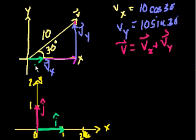So v sub x is in the exact same direction, and it's just a scaled version of this unit vector. And what multiple is it of that unit vector? Well, the unit vector has a magnitude of 1. This has a magnitude of 10 cosine of 30 degrees. So I think that's like 5 square roots of 3 or something like that.